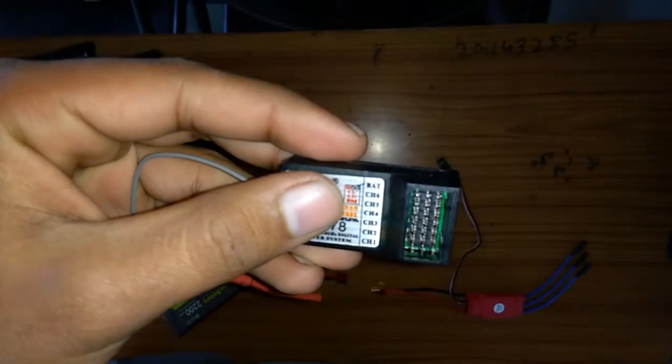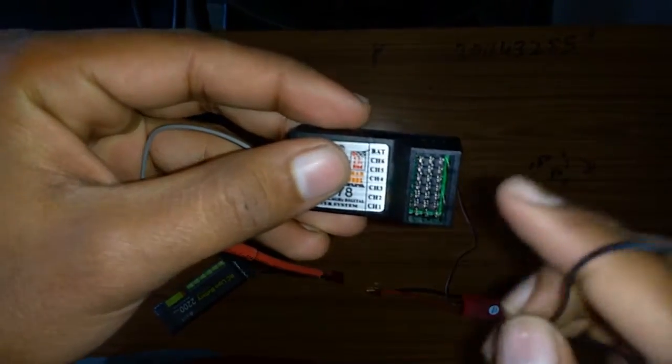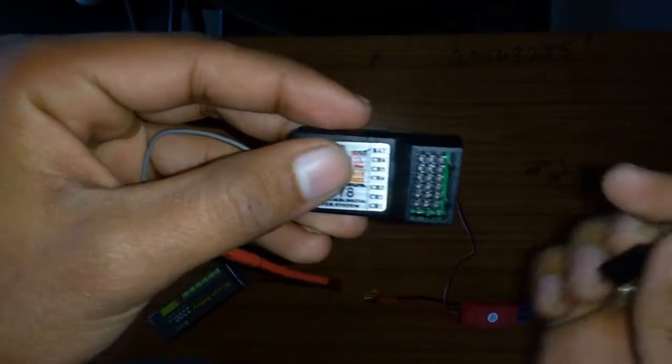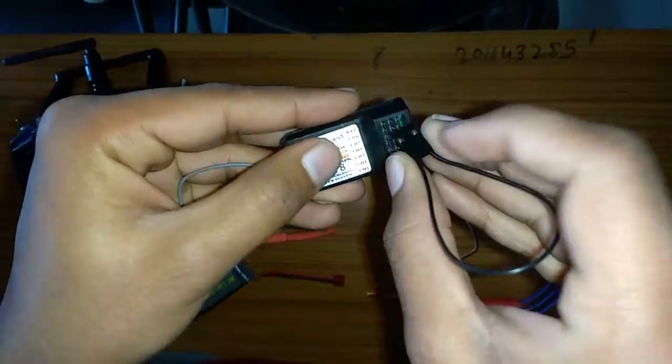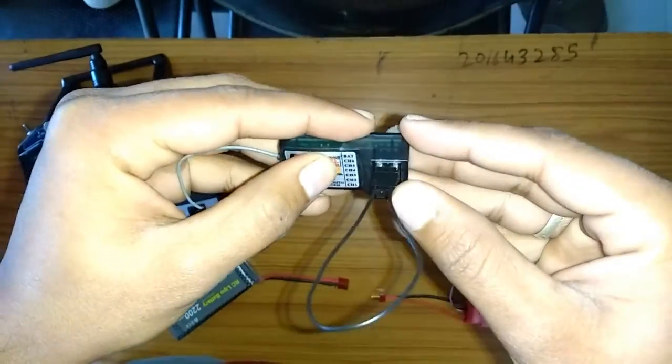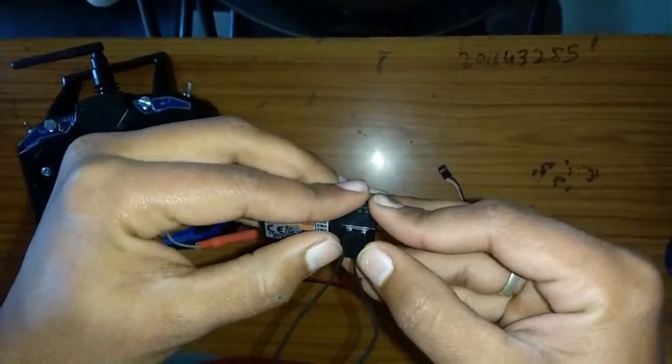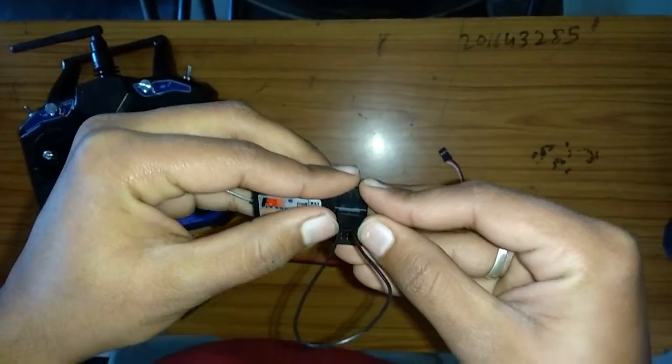First of all, you can see there are six channels listed on the receiver and one extra section which is represented by BAD on the receiver. You have to connect the black binding cable which you got with the receiver to the BAD section or binding section. This cable actually connects or shorts the ground of the receiver with the signal.